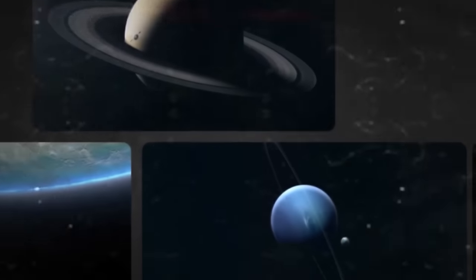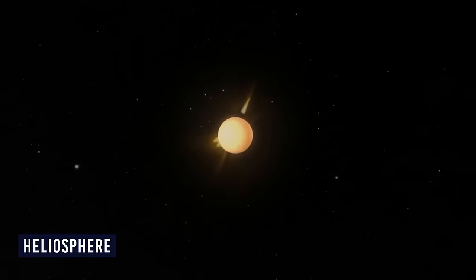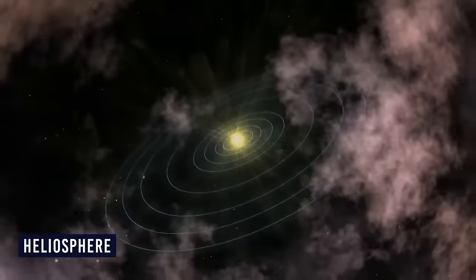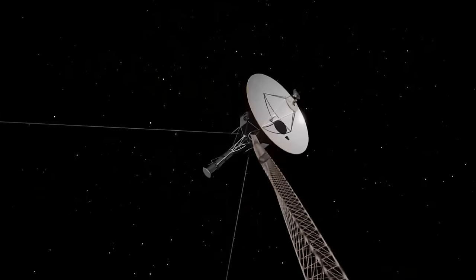Though the Voyagers wouldn't really enter interstellar space until they left the heliosphere, the space bubbles surrounding our Sun, the Voyager interstellar mission formally began on January 1, 1990, and all planetary encounters were completed within a decade.